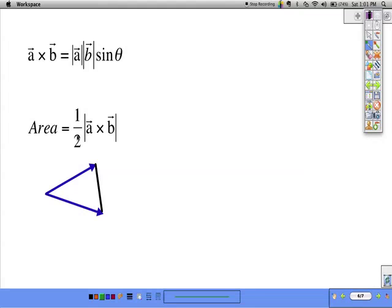Now, we know that the area of a triangle is one-half AB sine theta. We can relate this to vector ideas, too. The cross product can also be found by taking the magnitude of a times the magnitude of b times the sine of theta.